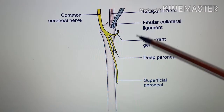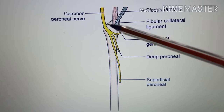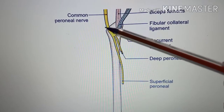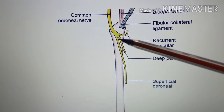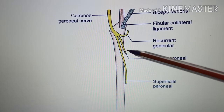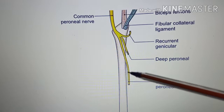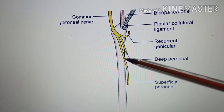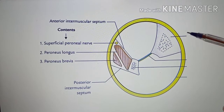In this diagram you can see the common peroneal nerve, which is dividing into the deep peroneal nerve and the superficial peroneal nerve.